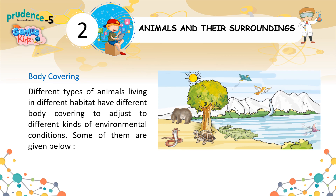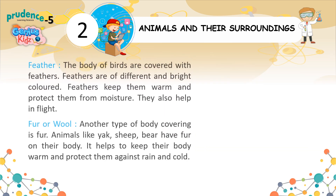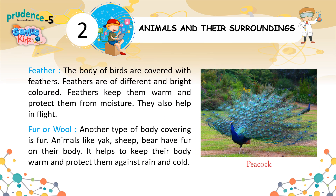Body Covering. Different types of animals living in different habitats have different body coverings to adjust to different kinds of environmental conditions. Feathers: the body of birds is covered with feathers. Feathers are of different and bright colors. They keep birds warm, protect them from moisture, and also help in flight.